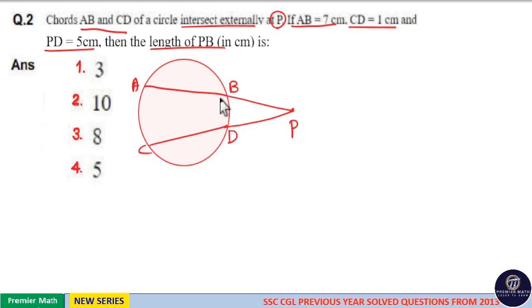When two chords of a circle intersect externally at a point, then the product of the lengths of their segments are equal. That is, PA into PB is equal to PC into PD. Length of segment means PA and PB, which is equal to PC and PD.